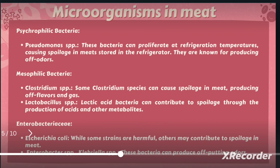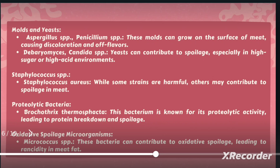Mesophilic bacteria such as Clostridium can cause spoilage by producing gases and off-flavors. Lactobacillus species can cause fermentation of meat. Similarly, E. coli and other Enterobacter species are reported to cause meat spoilage, possibly due to cross-contamination. Aspergillus and Penicillium species can also easily grow on meat surfaces.